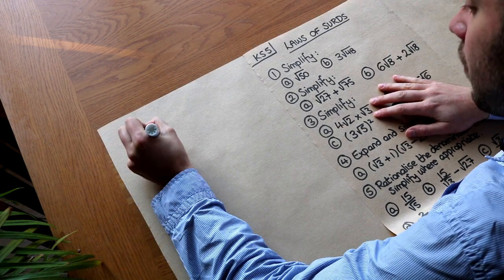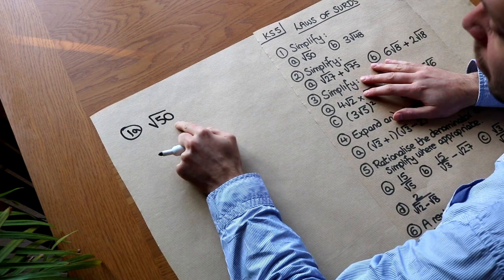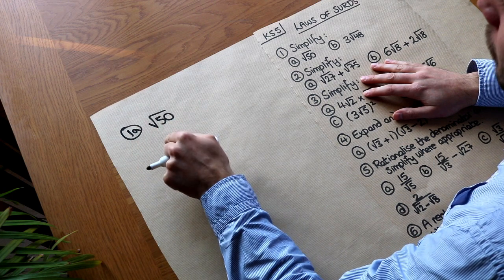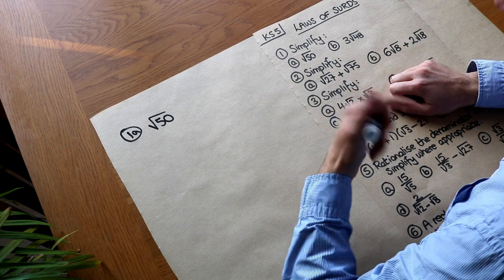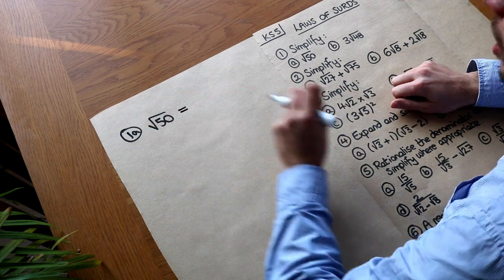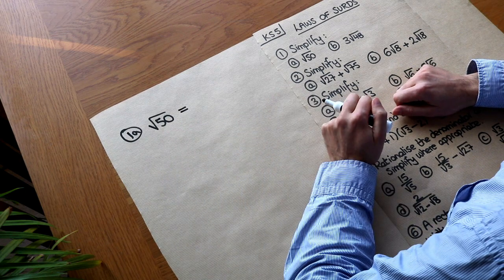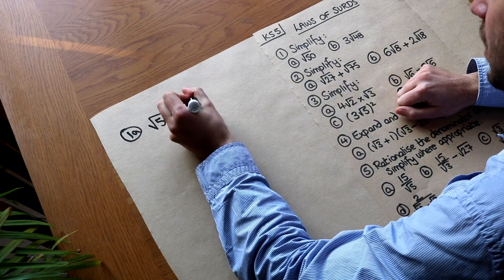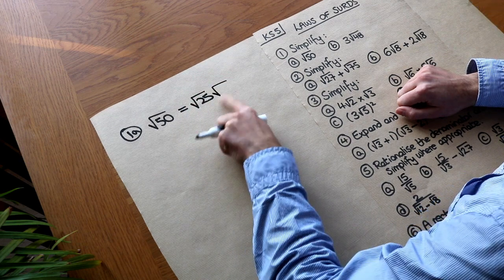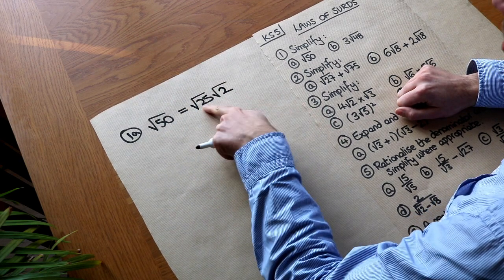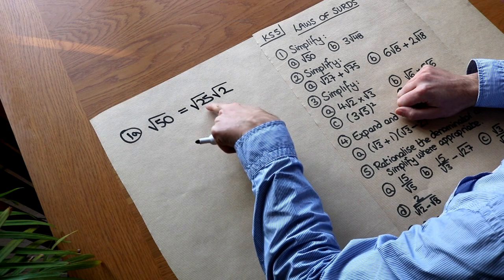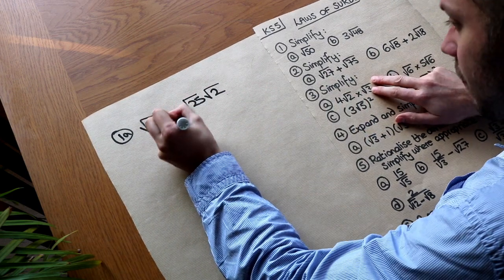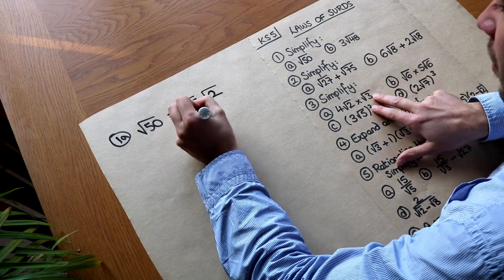So if we have root 50, we try to find two numbers that multiply to give 50. We look for the biggest square number that's a factor of 50. Well, 25 is a square number that's a factor of 50. So we write it as root 25 times root 2, because 25 times 2 is 50. And because the square root of 25 is just 5, it becomes 5 root 2.